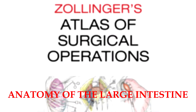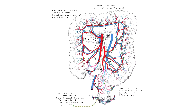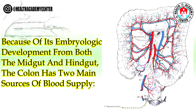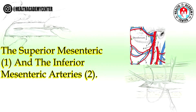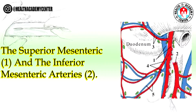Anatomy of the Large Intestine. Because of its embryologic development from both the midgut and hindgut, the colon has two main sources of blood supply: the superior mesenteric artery (1) and the inferior mesenteric artery (2).